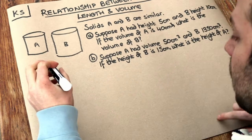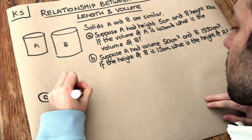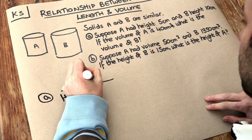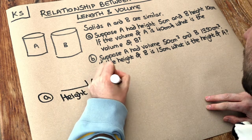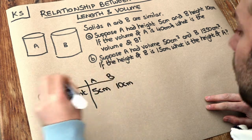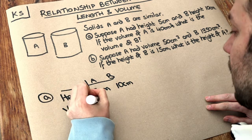Well, let's look at what information we have here. We've got the heights of A and B are 5cm and 10cm. And we've also got the volume of A is 40cm cubed.